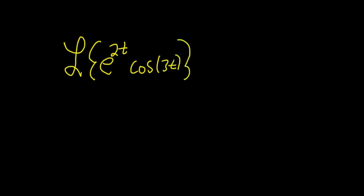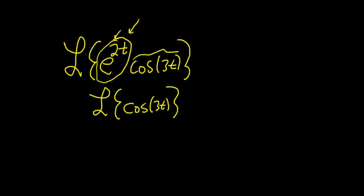So this is actually extremely easy. Whenever you have an e to a number times t in front of a function, what you do is you drop the e and you replace it with a shift. So this is cosine of 3t, and then you just replace this with a shift. So this is a shift, so you draw a line.